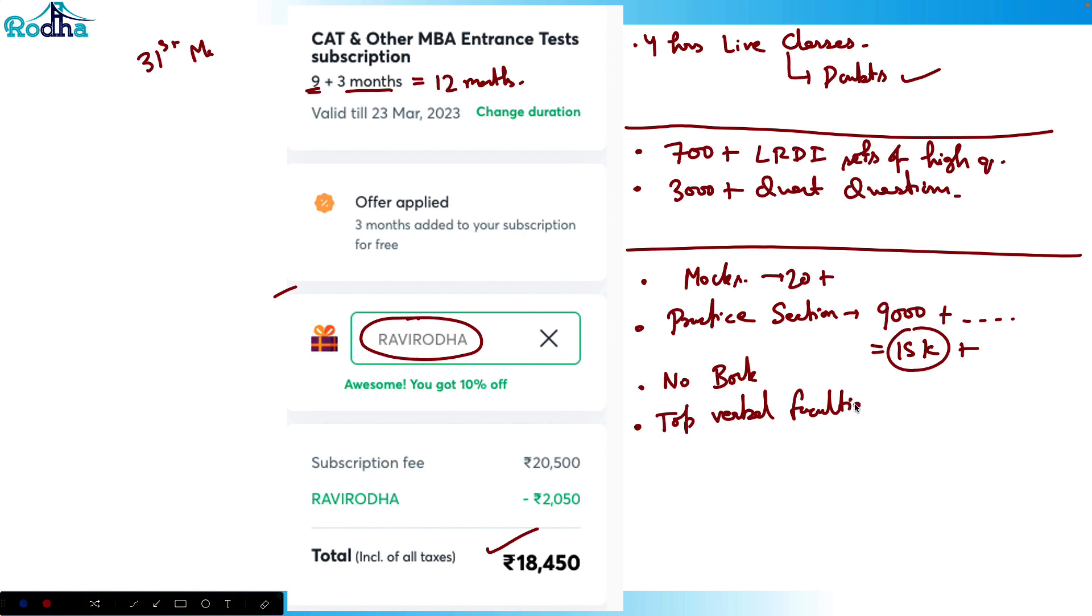You can study verbal, so basically all in one subscription. It works like Netflix - you get everything in only one subscription. This offer is valid till 31st March, so you can use this. Thank you.